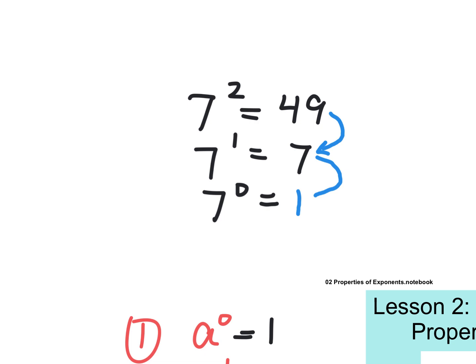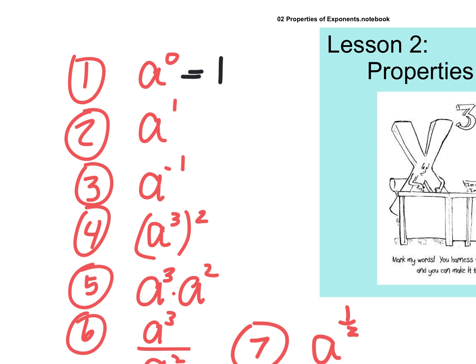See how that works? That's why it's one. All right, so back to anything to the zero is one. A to the one is just A. A to the negative one is one over A.